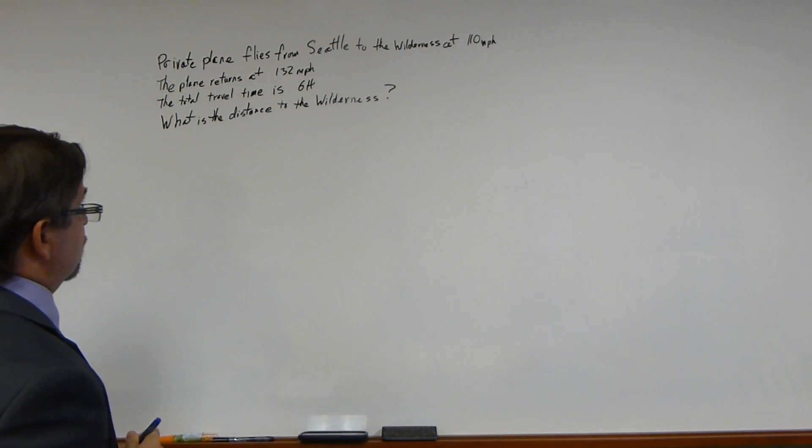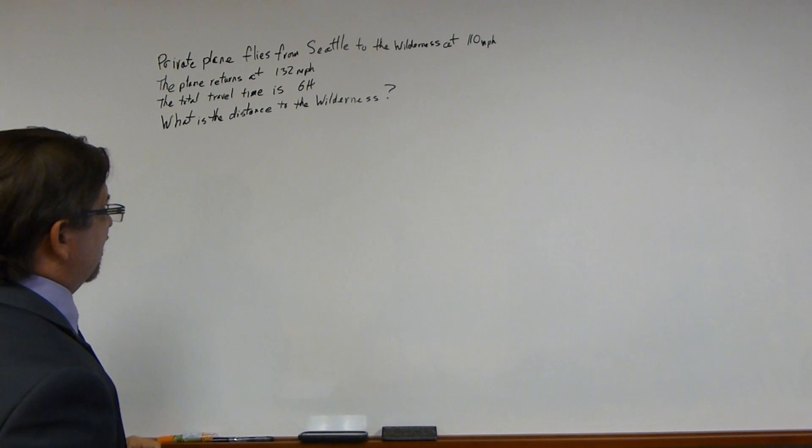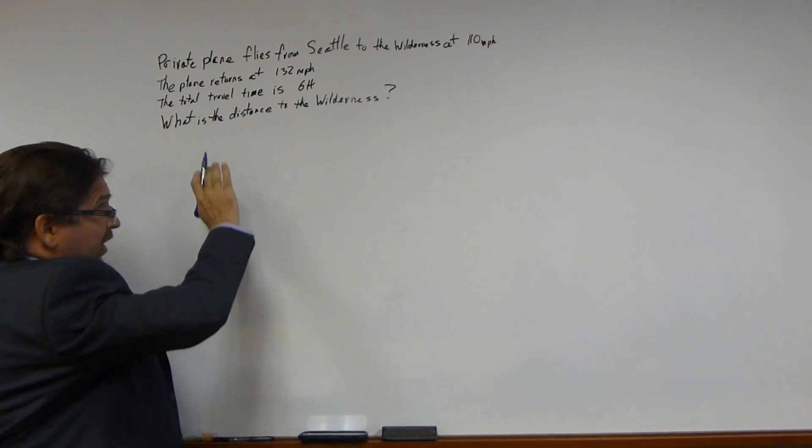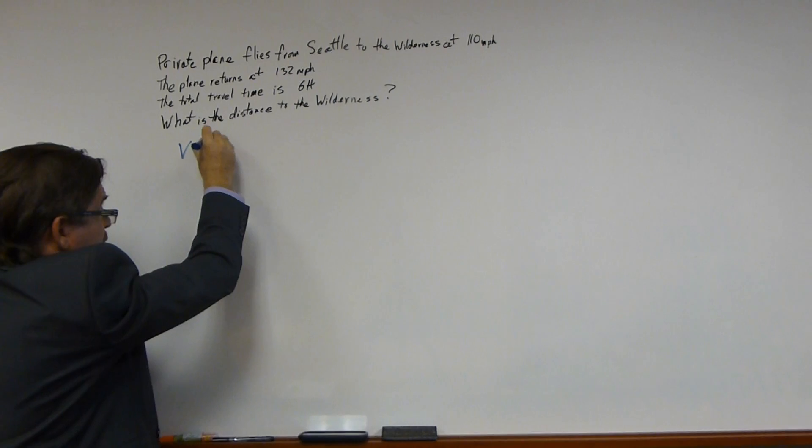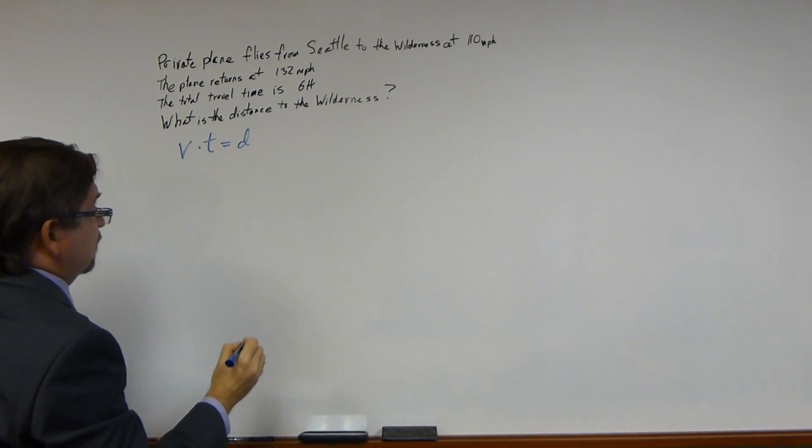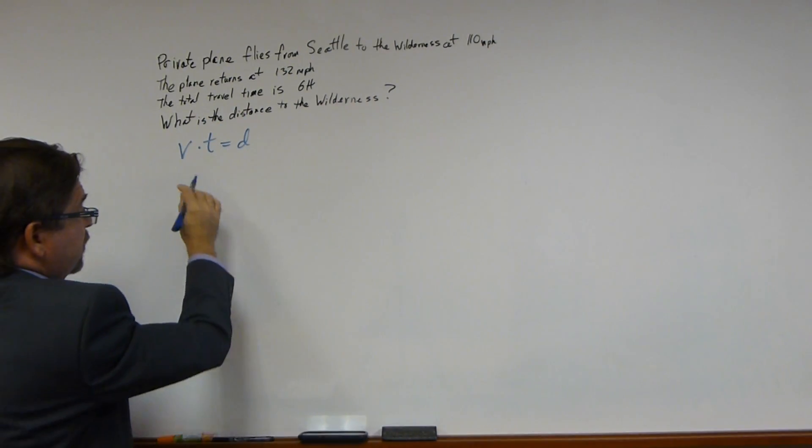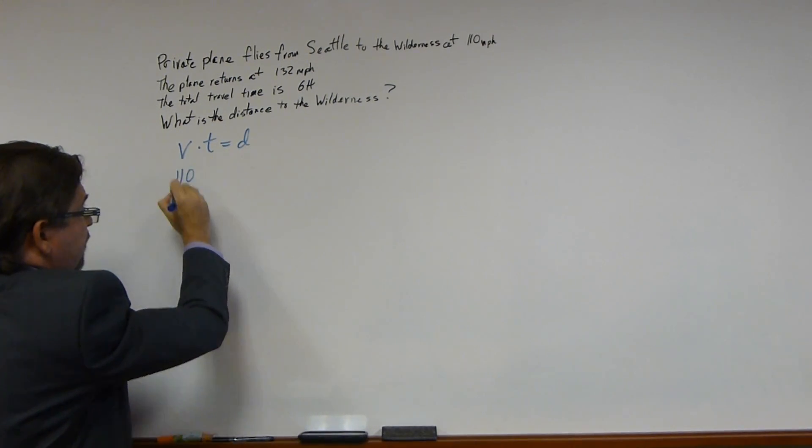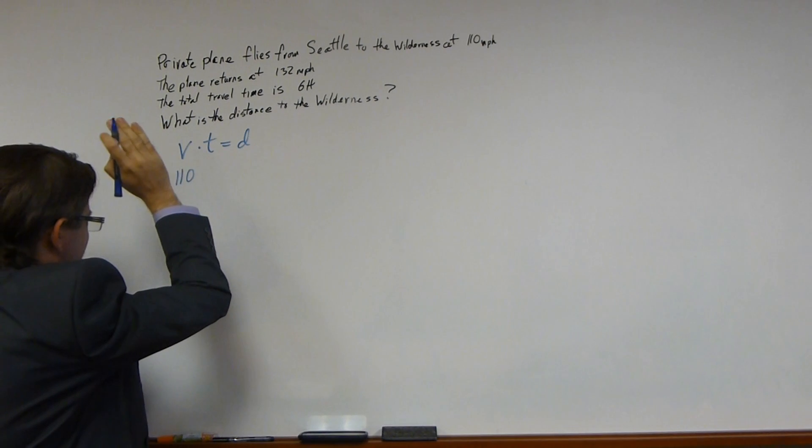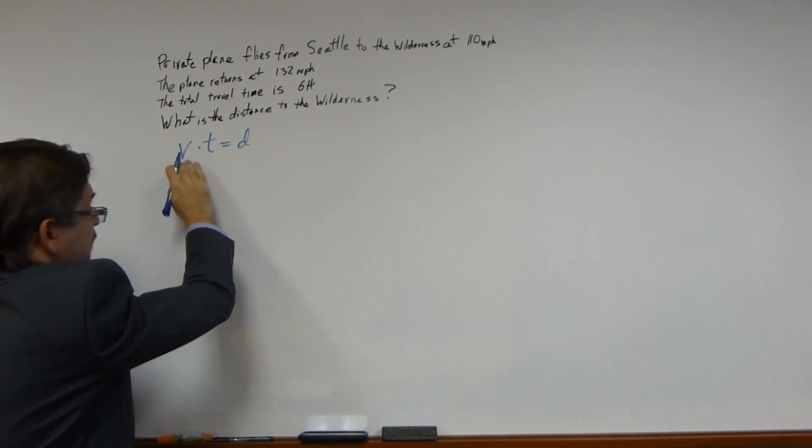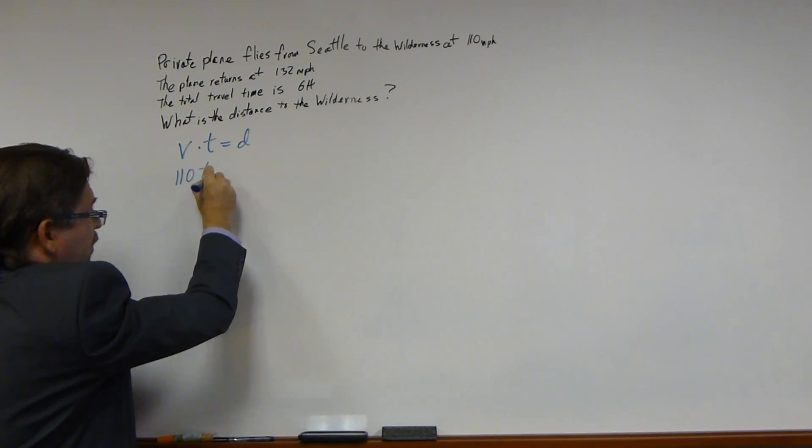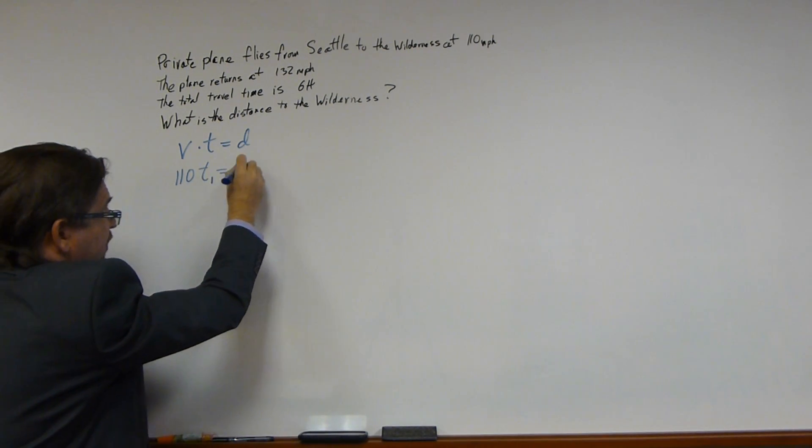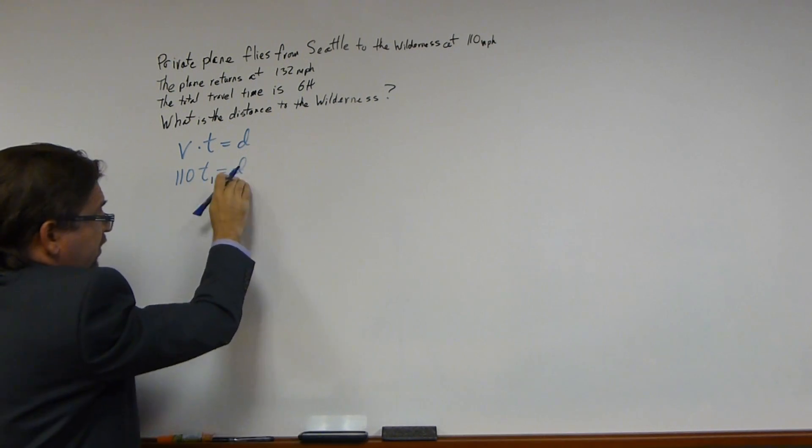First of all, what do we know? Well, we know that a plane flies to a certain place. So velocity or speed times time equals distance. Our velocity was 110. Velocity is technically different from speed. Don't worry about it. So the speed was 110 miles per hour. Some time, I'm going to call it time 1, equals some distance. Distance is what we're solving for.